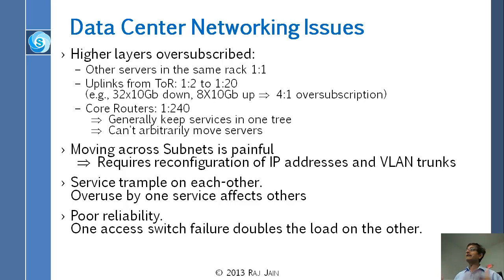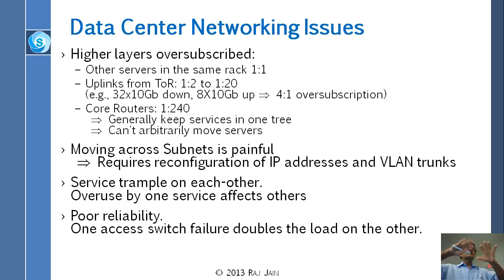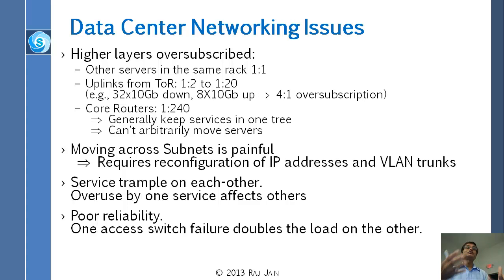240 servers can hit the core router, but it cannot really serve all of that. That is basically the reason you don't want to go through the core routers as much as you can. If you want to go from one server to the next, you want to keep them in the same tree — same part of the sub-tree, same part of the layer 2 tree — as close together as possible.